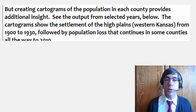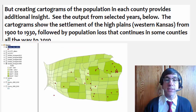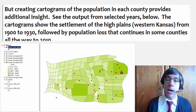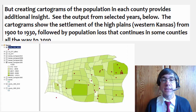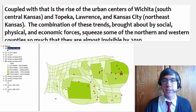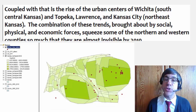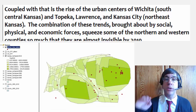See the output from selected years here. The cartograms show the settlement of the High Plains or Western Kansas from 1900 to 1930, followed by population loss that continues in some counties all the way to 2010. Coupled with that is the rise of the urban centers of Wichita, South Central Kansas, and Topeka, Lawrence, and Kansas City in Northeast Kansas.